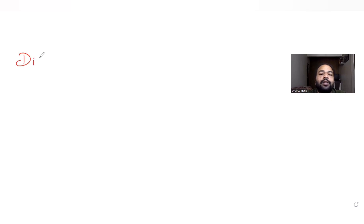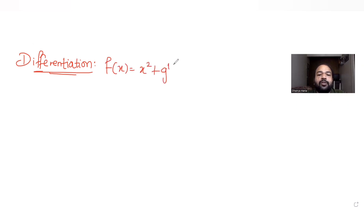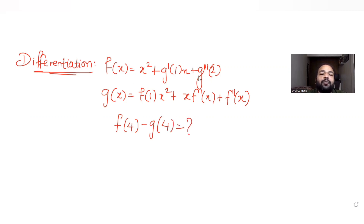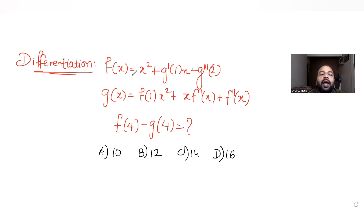Hi guys, I hope you are all doing well. Today's question is from the topic of differentiation. We have been given f(x) = x² + g'(1)·x + g''(2), and g(x) = f(1)·x² + x·f'(x) + f''(x). We need to calculate the difference between f(4) and g(4), with four options given: 10, 12, 14, and 16. This question is taken from JEE Mains 2023.